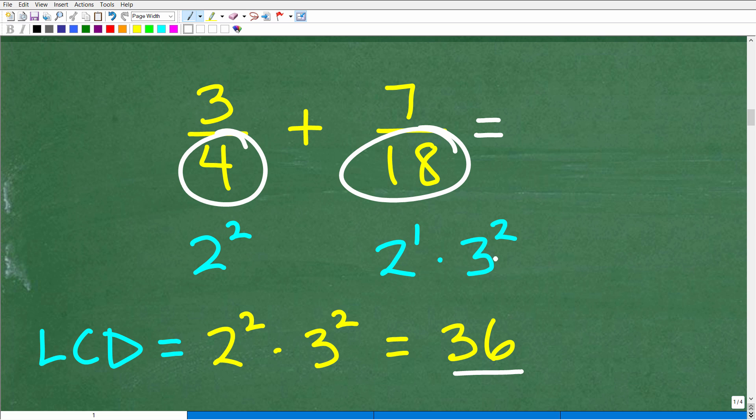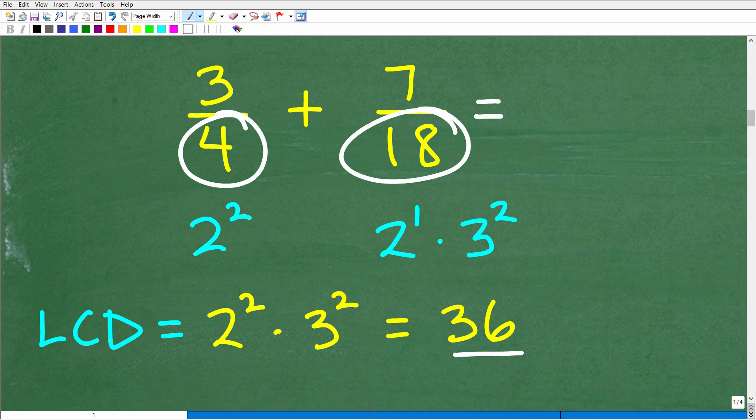And the prime factors of 18 is 2 times 9 or 2 times 3 squared, or 2 to the first times 3 squared is the same thing as 2 times 9. So I write this way as a quick review on how to find the lowest common denominator.